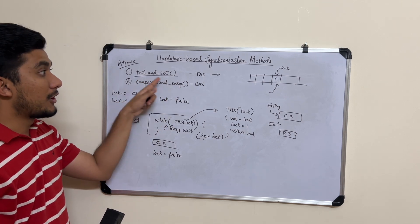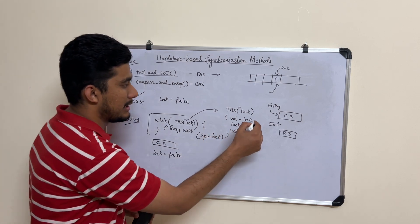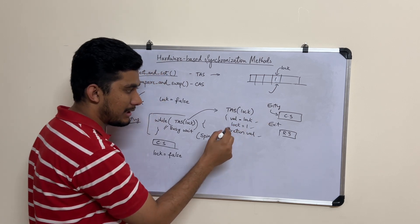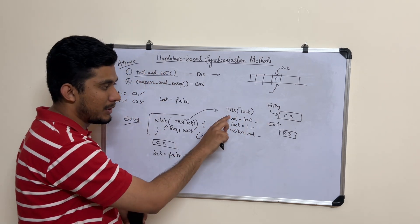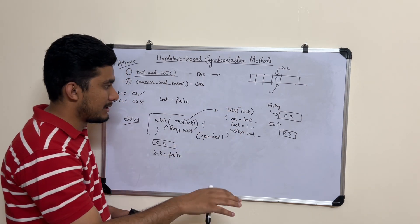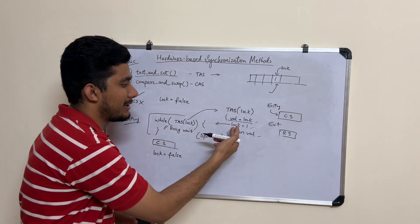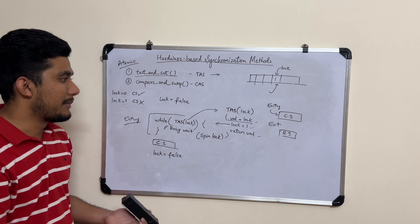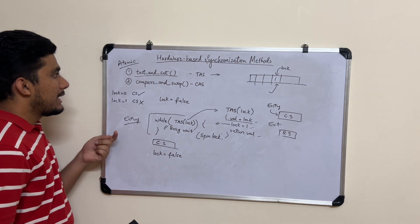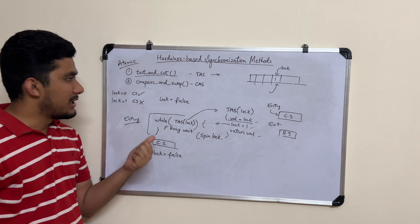If you look at TAS, it is an atomic operation. Even though it has multiple steps inside — taking the old value, setting to 1, and returning — this entire thing will be done together or not at all. It won't happen that you do part of it and come out with the lock not properly set. Everything will be done or nothing will be done. That's how test-and-set achieves process synchronization.